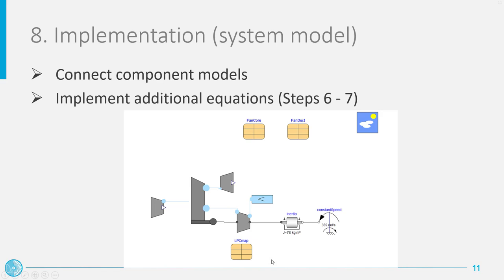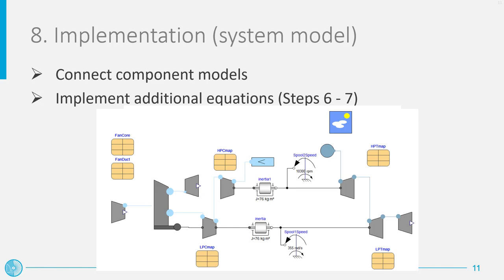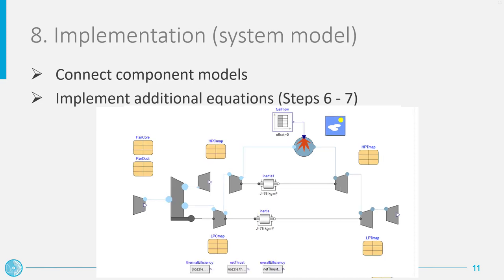Once all the component models have been coded, their implementation verified, and possibly their predictive capabilities validated, it is possible to implement the overall system model. This task can be relatively simple if the modeling environment features a graphical user interface like Dymola or OpenModelica. It is then sufficient to drag and drop the component models from the models library into the system model and connect them together as in the process flow diagram of the system. I advise you to develop the system step by step, starting with a relatively simple subsystem and further complicating it. Each submodel, as well as the overall system model, can be solved only if the number of known variables is equal to that of the equations. The advantage of developing the system model step by step is that possible mistakes can be more easily identified and corrected. In the picture, you can see the final result obtained for our turbofan engine.